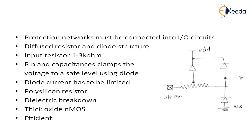This clamping is done with the help of a diode. But the diode current may spoil the device because diodes have sudden breakdown. So the diode current has to be limited — I can go for a polysilicon resistor. But still, there is some dielectric breakdown that occurs if I use a polysilicon resistor for limiting my current. When we used a diode, we had some limitation in current, so we went for a polysilicon resistor, but even in that case there was a dielectric breakdown.